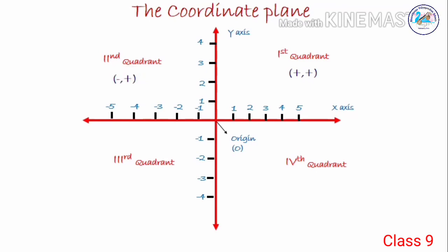So, the x-value is negative in the second quadrant and the y-value is positive. When you consider the third quadrant, the x-value is negative and y-value also negative. The sign convention is minus, minus — both the x-value and y-value will be negative. Finally, when we come to the fourth quadrant, the x-value is positive and the y-value is negative. The sign convention is plus, minus. The first one is x-value and the second one is y-value.